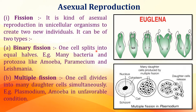In multiple fission, one cell produces many new individuals. Many daughter cells are formed simultaneously, and some survive while some are destroyed. These are our two types of fission: binary fission and multiple fission.